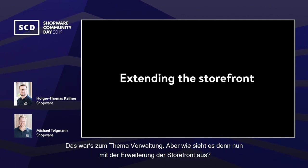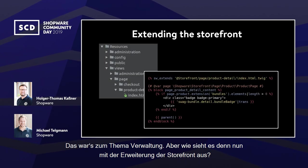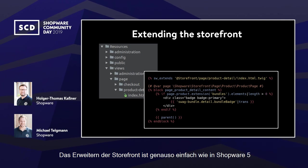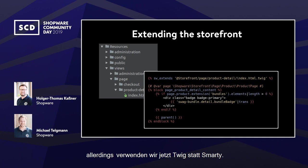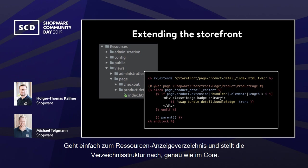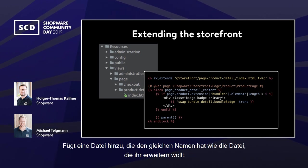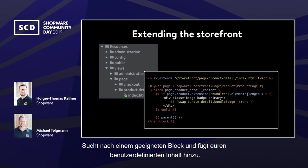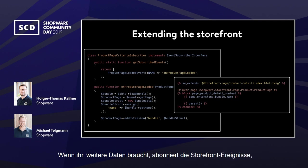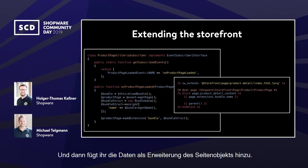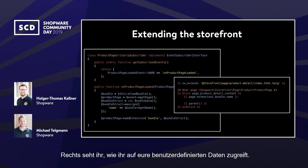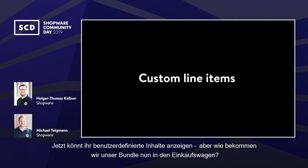What about extending the storefront? Extending the storefront is as easy as in Shopware 5, except we now use Twig instead of Smarty. Just go to the resources/views directory, rebuild the directory structure like in the core, add a file with the same name as the file you want to extend, search for a suitable block, and add your custom content. If you need additional data, subscribe to the storefront events and add the data as an extension to the page object.